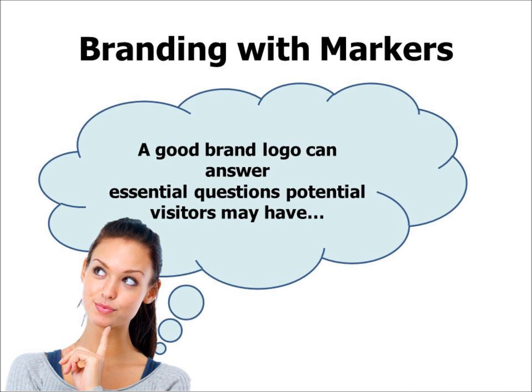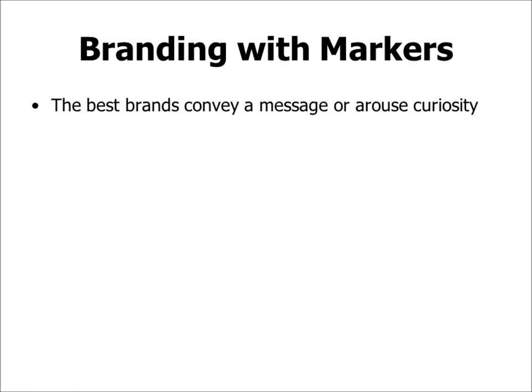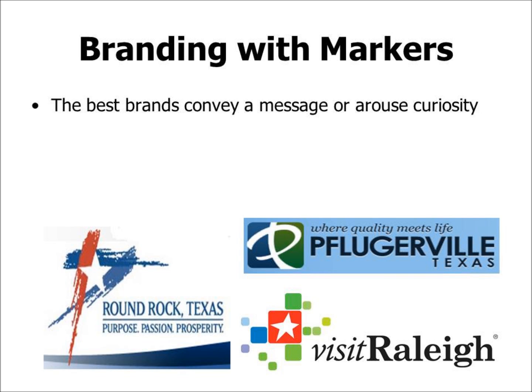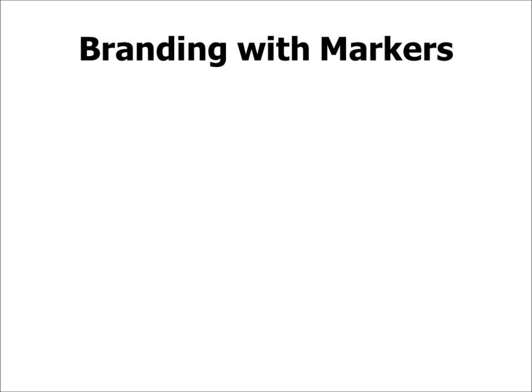A good brand logo can answer essential questions potential visitors may have. The best brands convey a message or arouse curiosity. Here are some local examples: Round Rock Texas — 'Purpose, Passion, Prosperity'; Pflugerville — 'Where Quality Meets Life'; and Visit Rally. These are fairly generic brand logos for communities that can appear on wayfinding markers, webpages, and letterhead. Sometimes being generic is okay — it says this is a safe, predictable bedroom community. Other communities try to forge a brand identity to differentiate themselves.